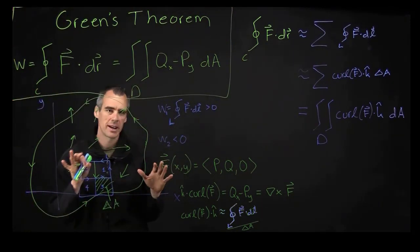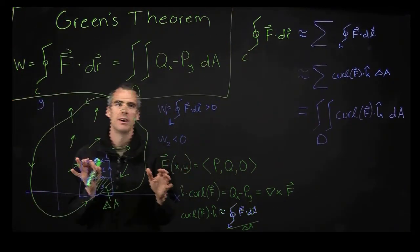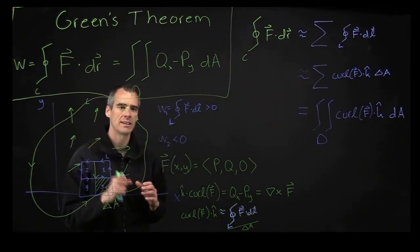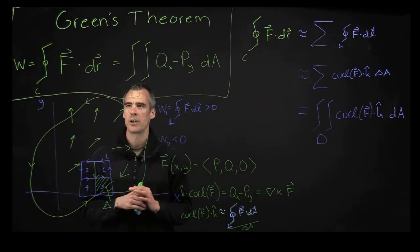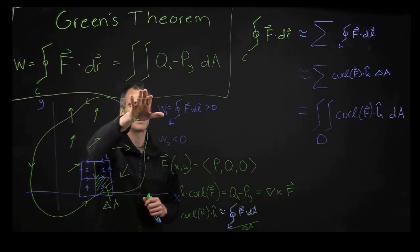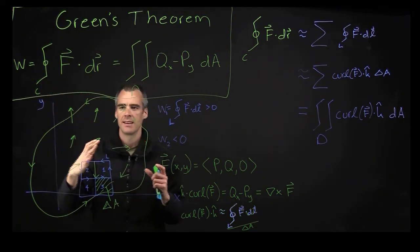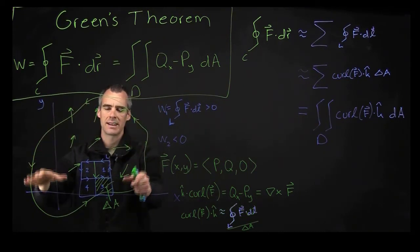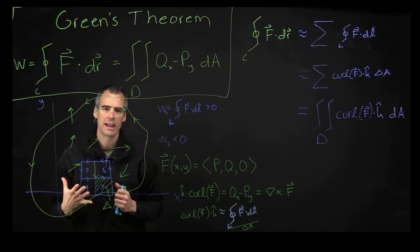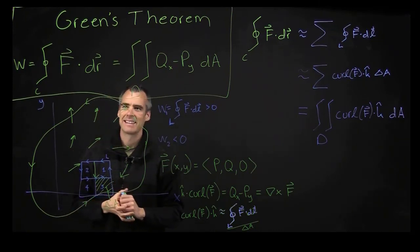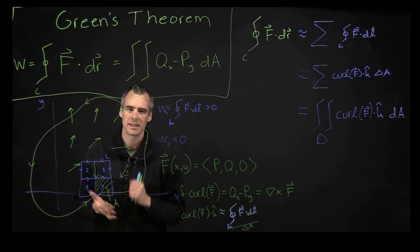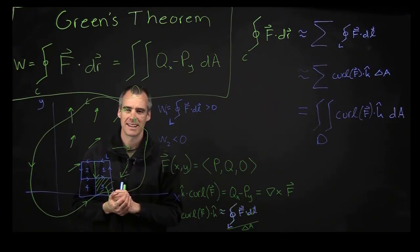Let me reemphasize: this is not a rigorous proof of why Green's Theorem is true, but hopefully it gave you an idea of where this comes from - how you can translate this line integral to this double integral over the region that the closed line integral is surrounding. Because if you're like me, this is not immediately obvious. I hope this helps a little bit. Until next time, take care.